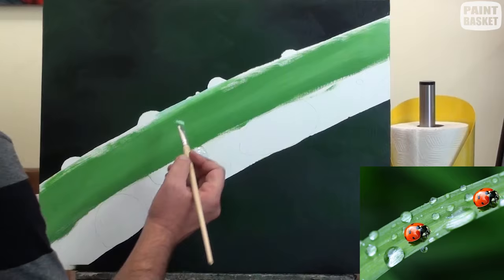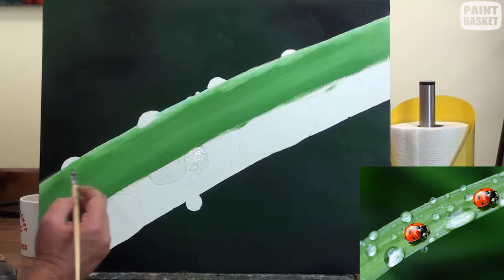Mix a base color for the top half of the leaf using sap green, alizarin crimson and white. Then block in the top half of the leaf.